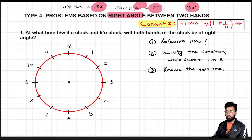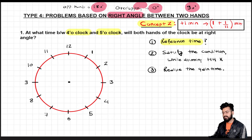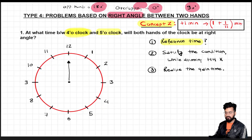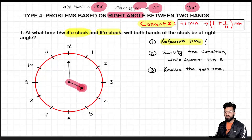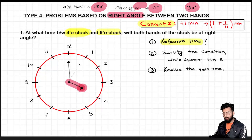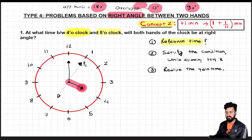Question: At what time between 4 and 5 o'clock will both hands of the clock be at right angle? Step one: pick a reference time — 4 o'clock. At 4 o'clock, the minute hand is at 12 and the hour hand is at 4. Next step: satisfy the condition while assuming the hour hand is stationary. If the hour hand is stationary, I can use it as the reference position and draw two perpendiculars. One perpendicular would point at 1 and the other at 7. These are the two positions of the minute hand.